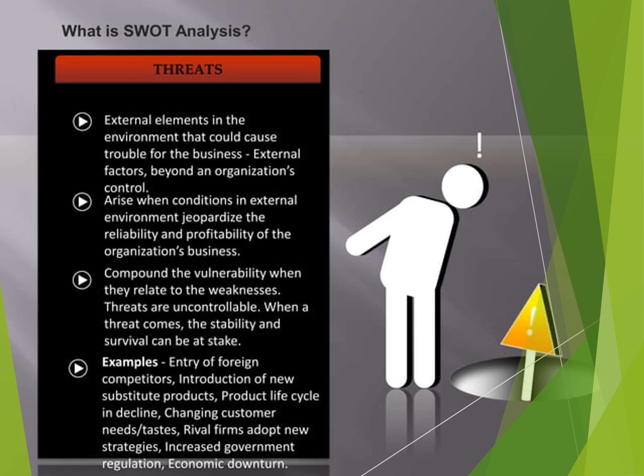Threats are external elements in the environment that could cause trouble for businesses. They are beyond the control of the organization and mostly arise when conditions in the external environment jeopardize the reliability and profitability of the business. Threats compound vulnerability when they relate to weaknesses, and are uncontrollable — when a threat counts, stability and survival can be at stake. Examples include foreign entry into the market, rival firms adopting aggressive strategies or marketing plans, and new innovative technology threatening companies that are not keeping pace.